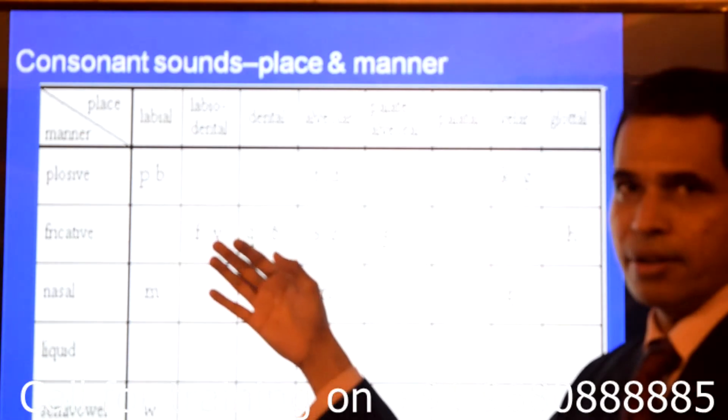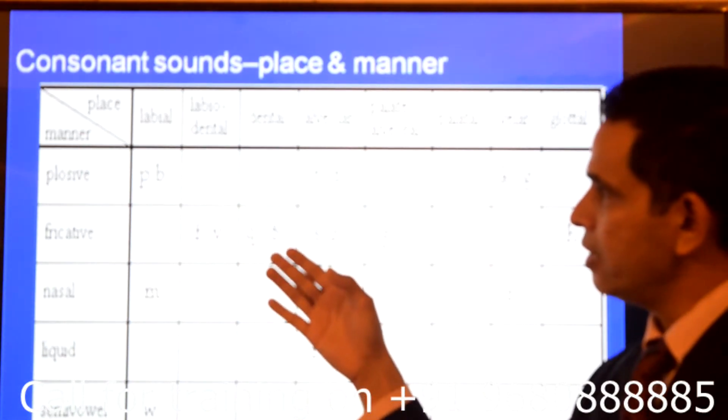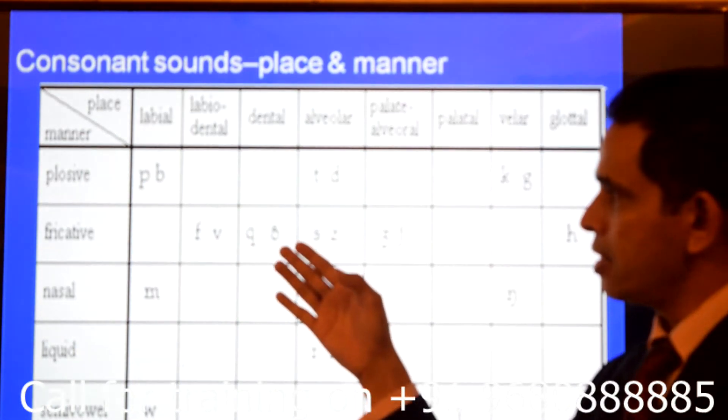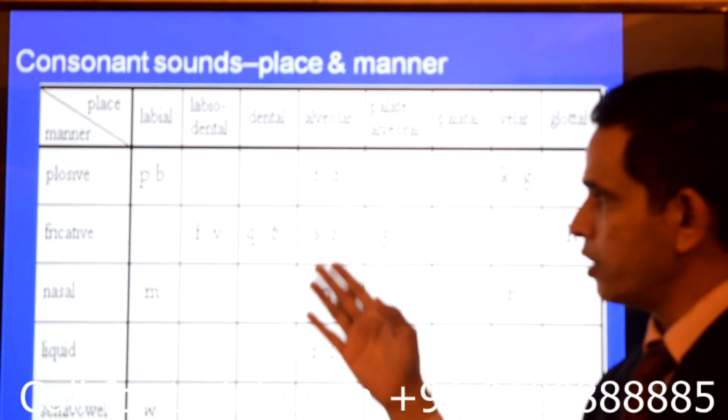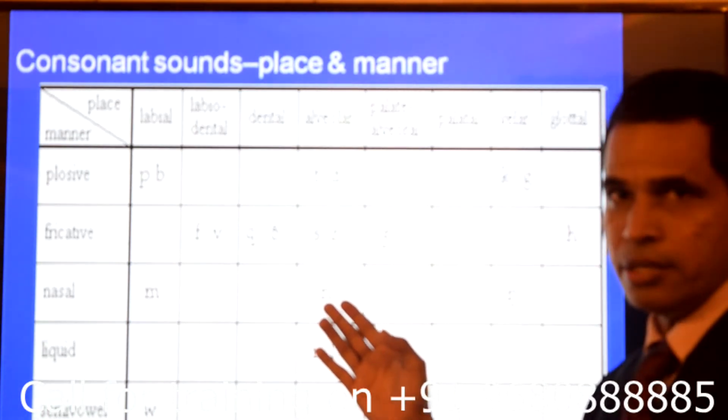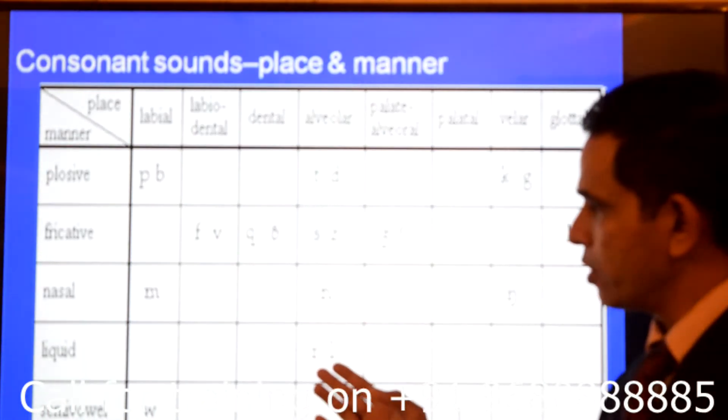Fa and bur. Then comes dental. Fa and la. Then comes alveolar, thadda. Then comes saza. This is fricative. Then comes nasal, na. Then comes ra and la.